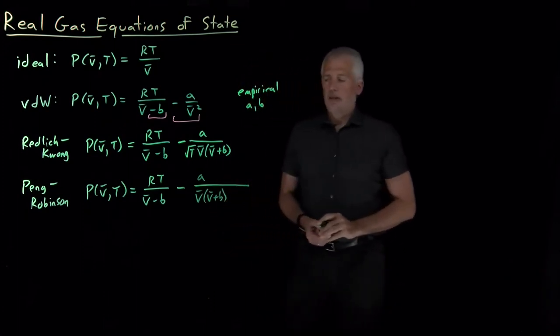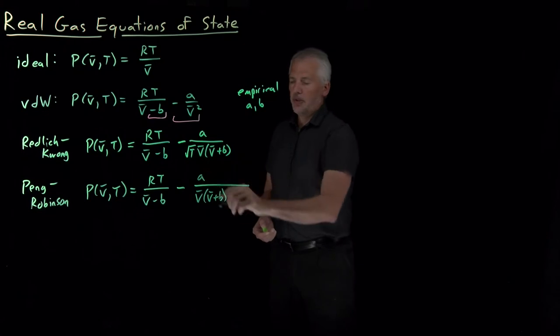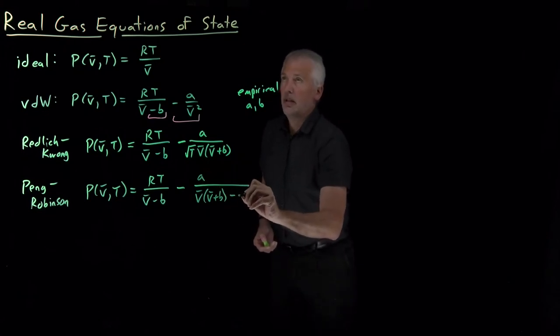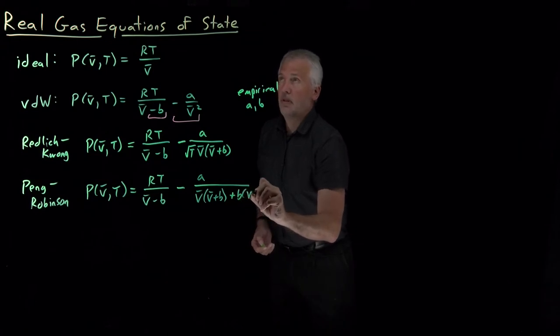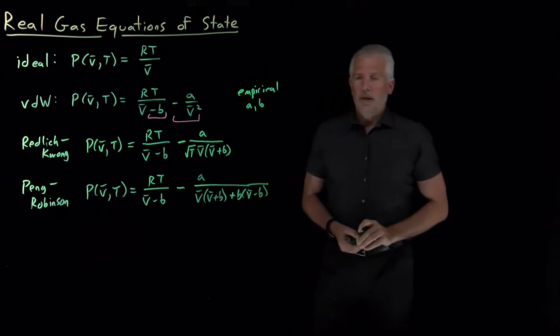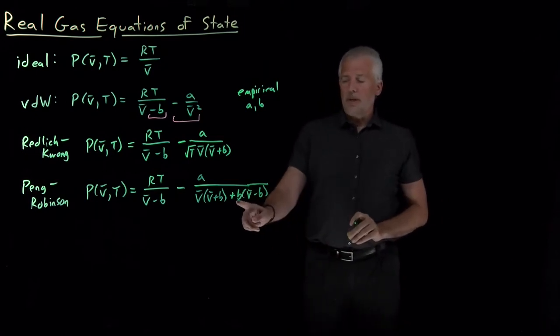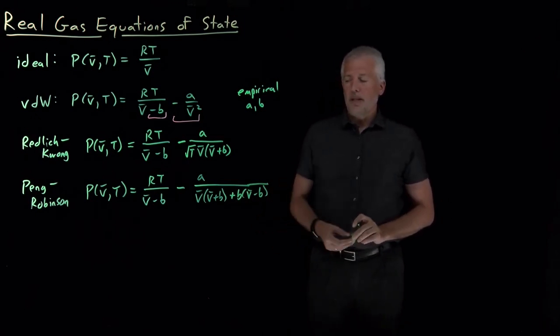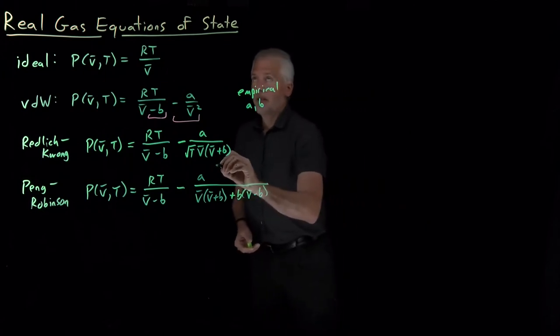But now, rather than having the temperature show up in the denominator, I've got some extra complications in the denominator, B times the quantity V bar minus B. And in the numerator, things get really complicated.